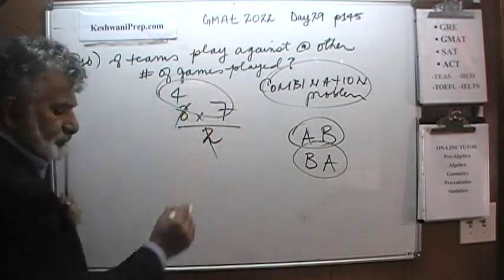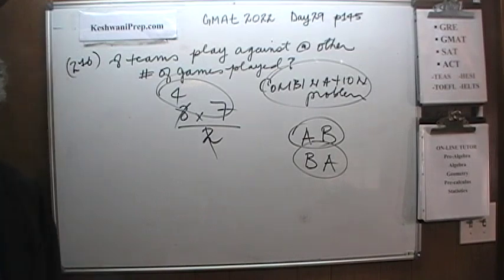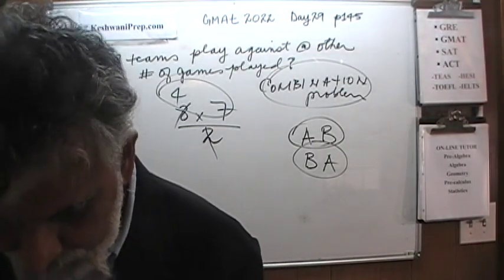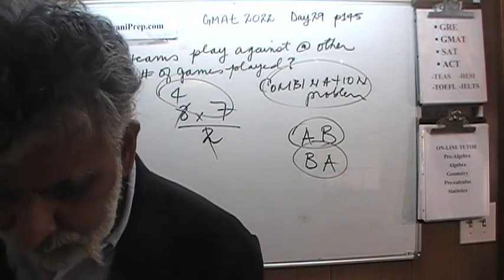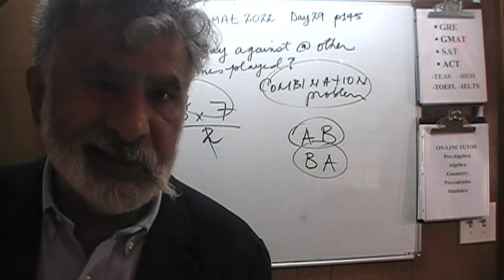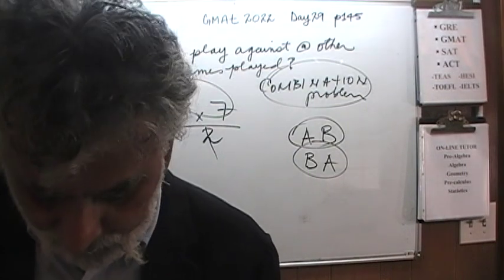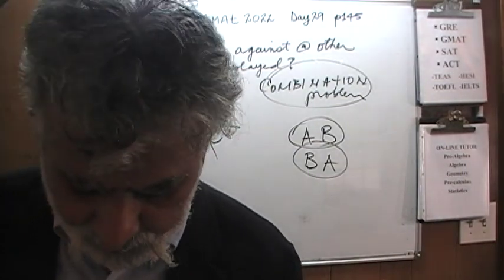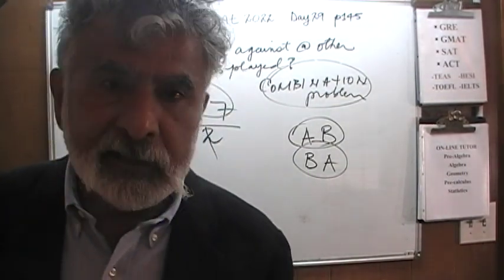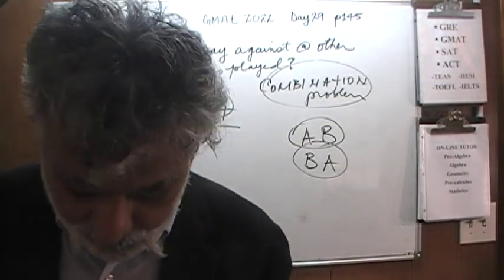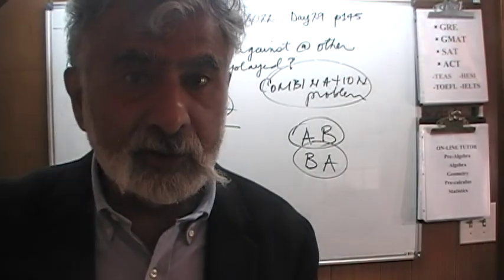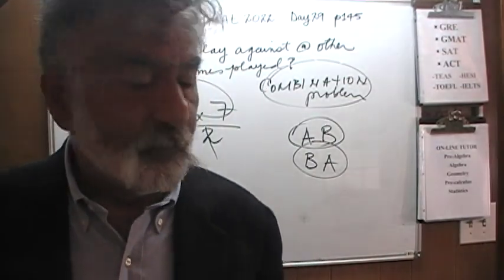The answer is 28. So 28 matches will be played among these 8 teams if each team plays every other team only once. This is a combination problem, not a permutation — order does not matter.